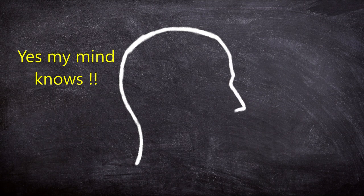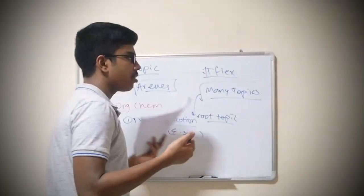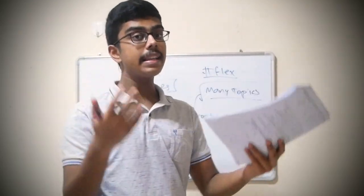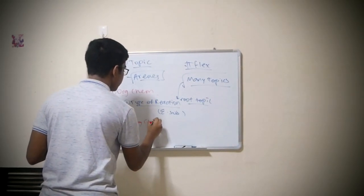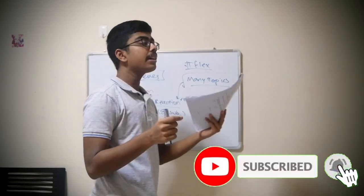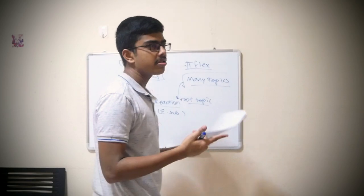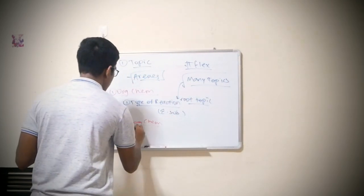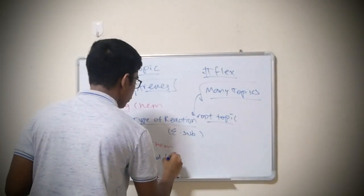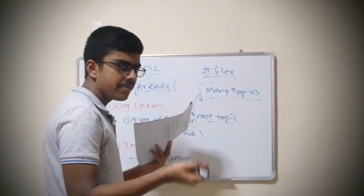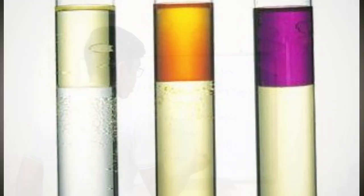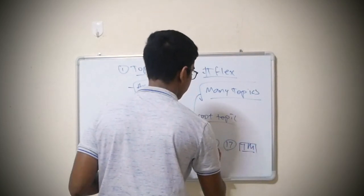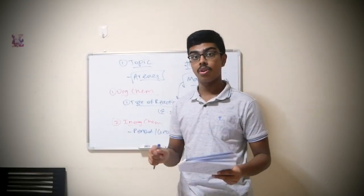Once you know the type of reaction, you know generally what's going to happen. For an inorganic chem topic, generally identify what period, what group elements they are testing. I'll give a couple examples - they may test you a group 2 element, they may test a group 17 element which is halogens, or they may ask you on transition metals. That's all for identifying a topic.